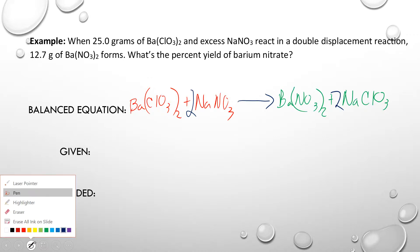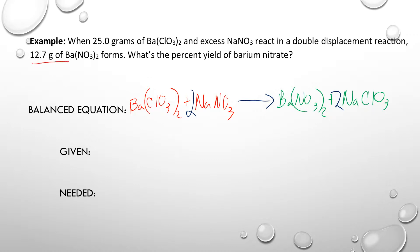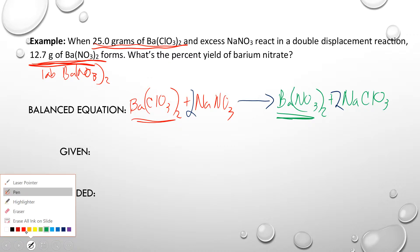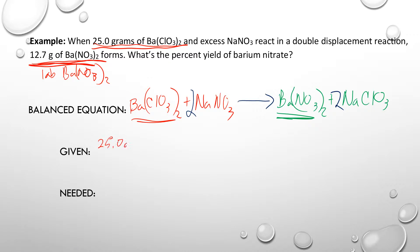For this problem, it tells you how much you got in the lab, so we don't need to figure out what we received — that's already given. What we need to do is start with 25 grams of Ba(ClO3)2 and figure out how much Ba(NO3)2 we're going to get. We're looking for the theoretical, or the expected amount.